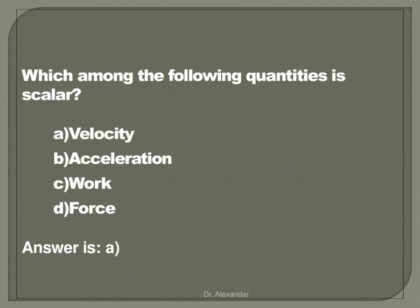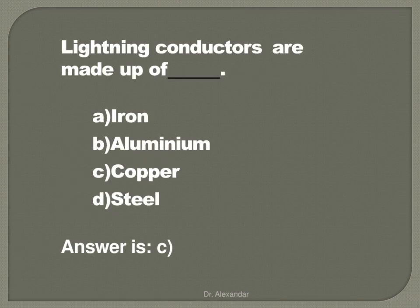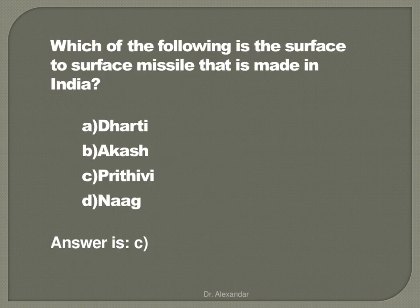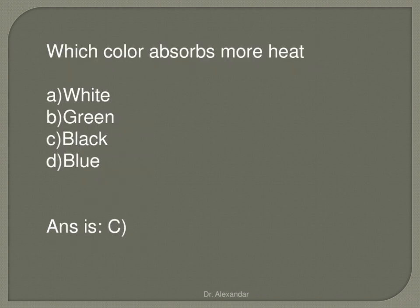Which among the following quantities is scalar? That is velocity. Lightning conductors are made up of copper. 1 kilocalorie of heat is equal to 4.2 times 10 to the power 3 joules. Which of the following is the surface-to-surface missile made in India? Which color absorbs more heat? That is black color.